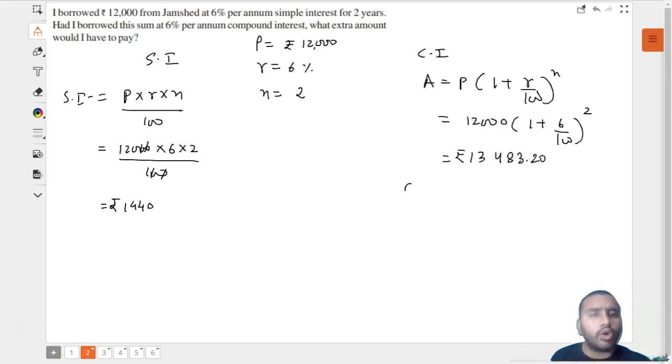So we want to find the compound interest. That is simply amount minus principal. That equals 13,483.20 minus 12,000, which equals rupees 1,483.20. So this was the compound interest.